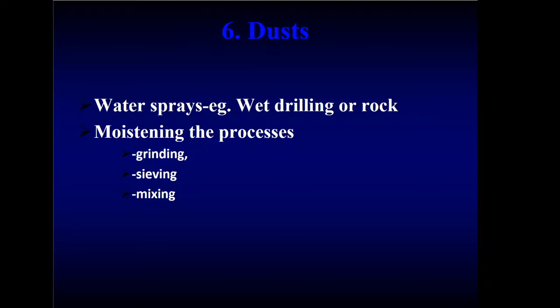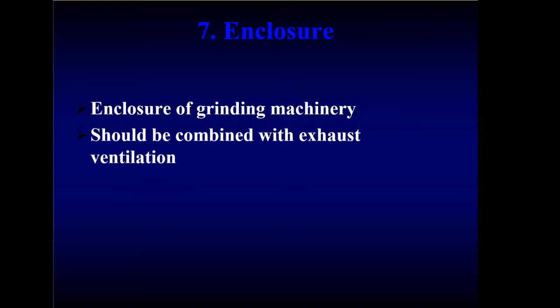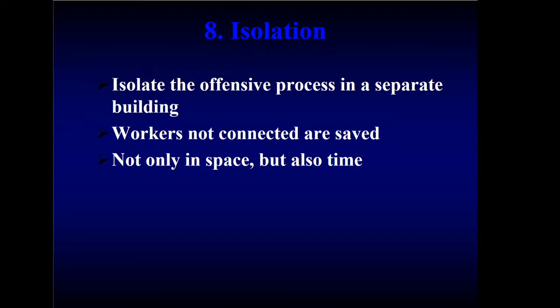Dust particles fly in the air when small, but settle when laden with moisture. The best way is to spray water wherever there is dust — wet drilling of rock, or ensuring humidity is high during grinding, sieving, or mixing. Enclosure: wherever there is contamination, enclose the process and put an exhaust so humans don't come into contact with it. Isolation: if a process is very hazardous, isolate it completely so workers don't need to enter that area — it can be done remotely.